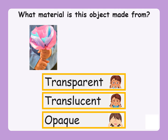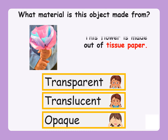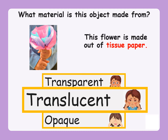In this picture, it looks like a child has made a flower out of something. What material is this object made from? This flower is made out of tissue paper. Is the tissue paper transparent, translucent, or opaque? The tissue paper is a translucent material, and the reason why it's translucent is because it lets a little bit of light through.